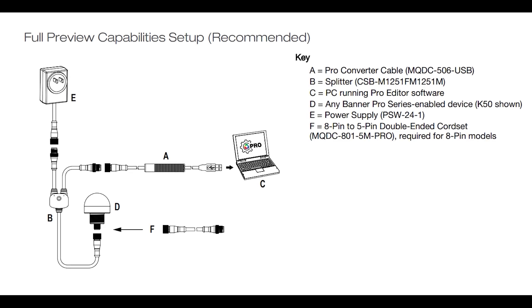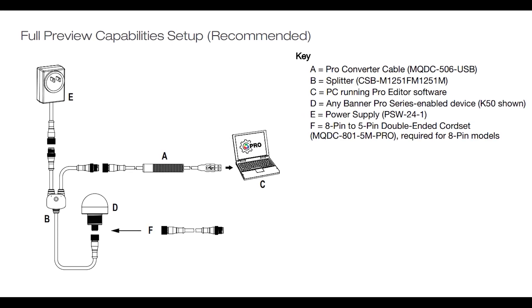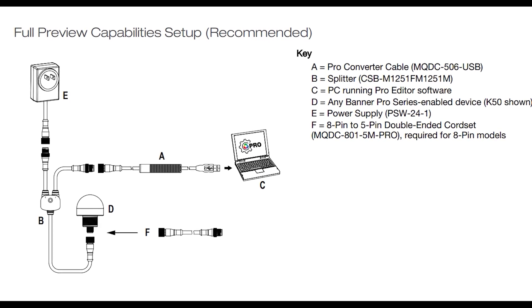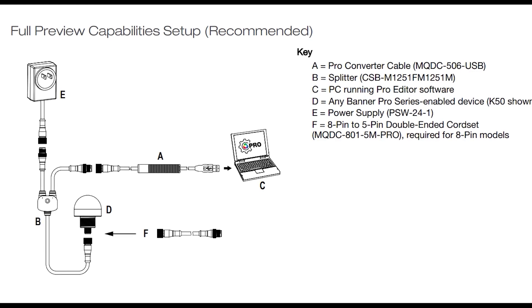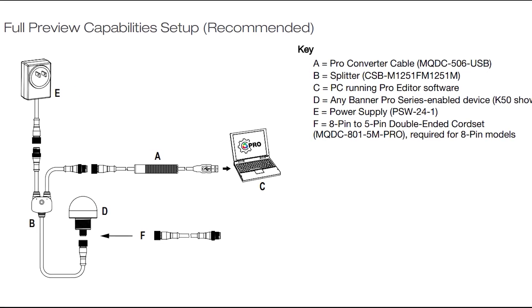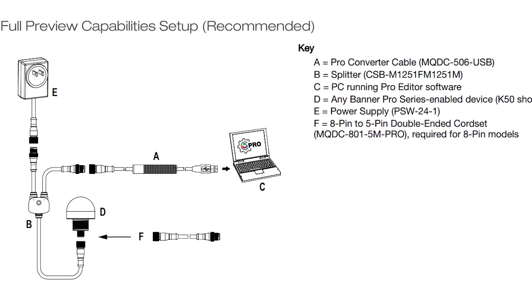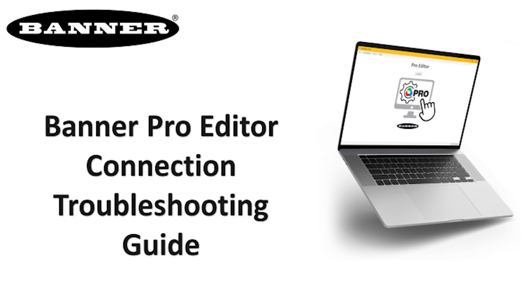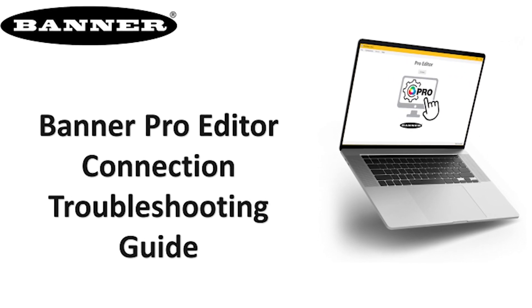The first step to setting up the TL50 Pro is to connect it to a Windows PC using the Pro Editor Cable Kit and by following the diagram in the datasheet. If you're having trouble connecting, check out our troubleshooting guide on the Banner Pro Editor software.